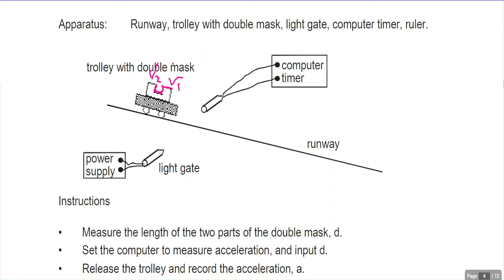If you need to incorporate light gates that calculate acceleration, this is the way to do it. You have a runway at a slope, and the acceleration is found that way. I hope this has been useful. Now we're going to move on to the CRO itself.